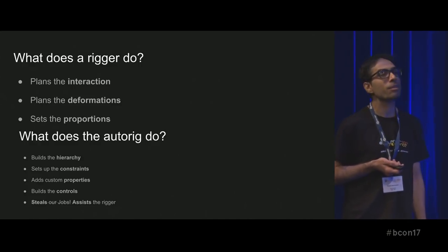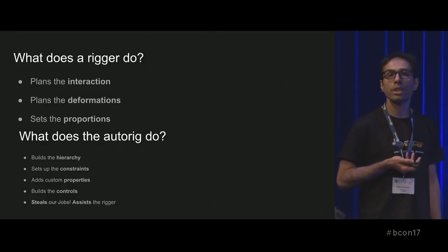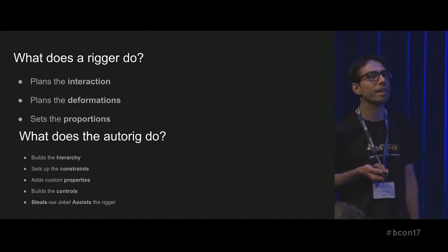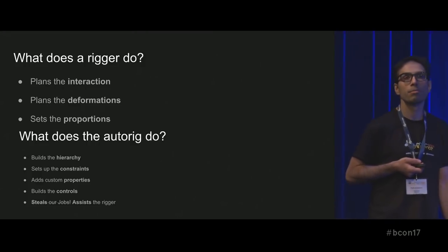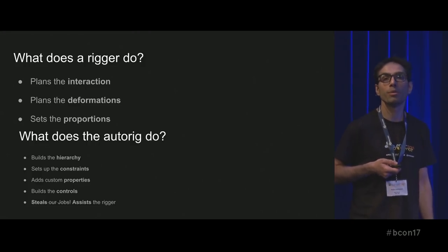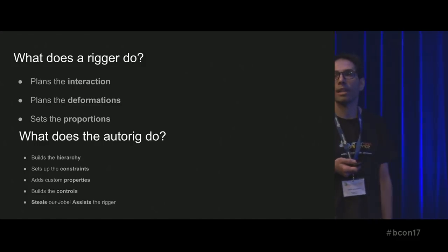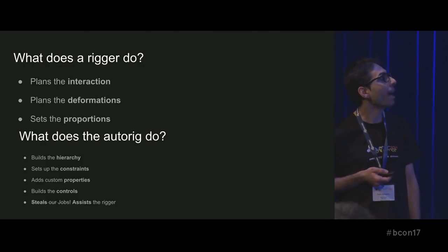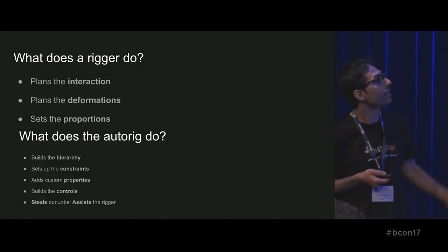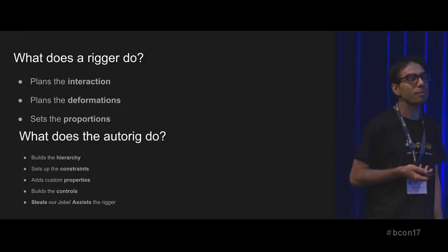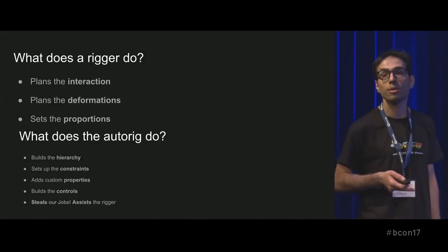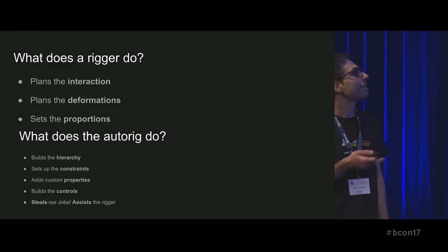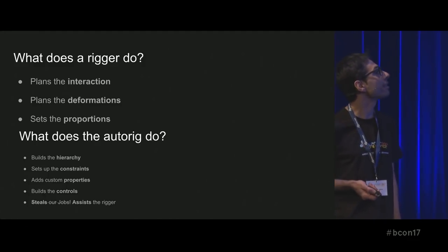We also plan which kind of deformation has to be achieved. Sometimes a character has to drink, so you want the neck to move accordingly. Sometimes he is shirtless, so you have to pay particular attention to the torso, muscles, and that kind of stuff. The autorig does all the rest — the complex and especially mechanical stuff — it assists the rigger, it doesn't steal yet.